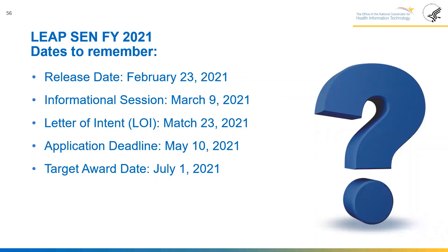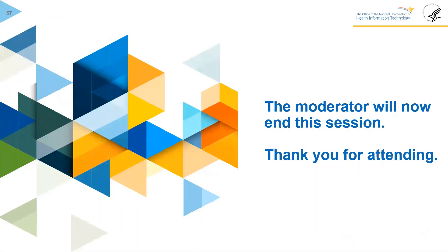Dates to remember for the LEAP SEND FY21: the release date was February 23rd; today, March 9th, is the information session; letters of intent are due on March 23rd; the application deadline is May 10th; and the target award date is July 1st. We want to thank you all for participating in this information session for the LEAP SEND 2021.